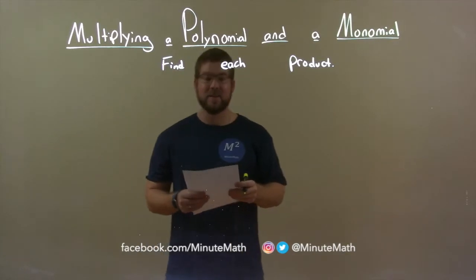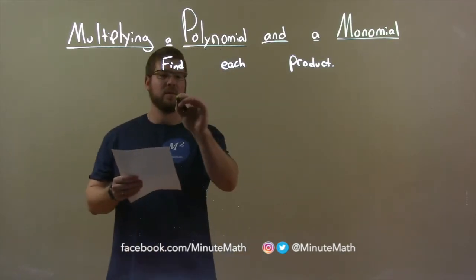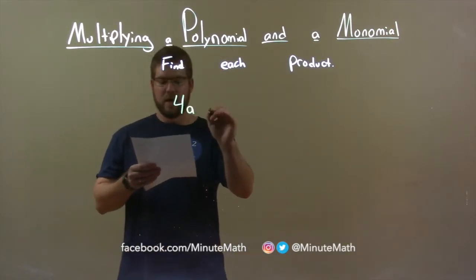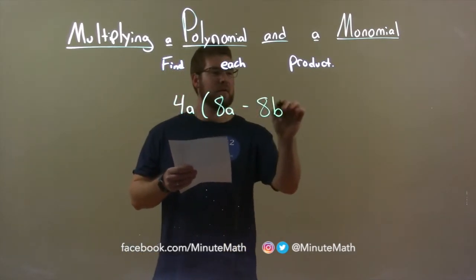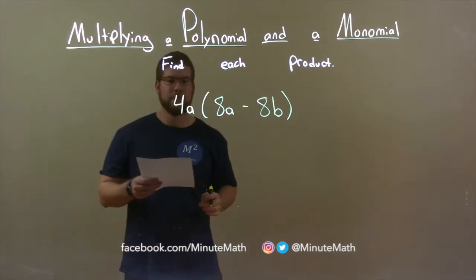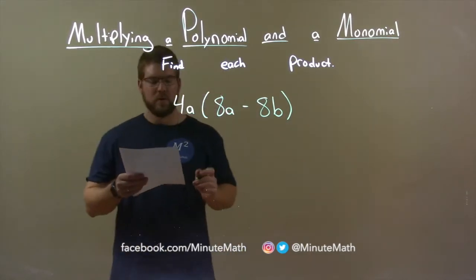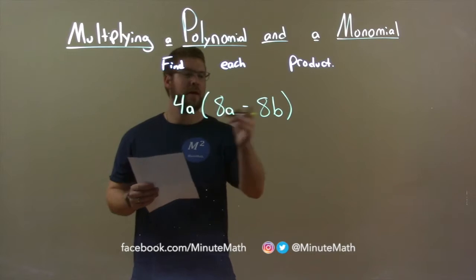So if I was given this product, 4a times 8a minus 8b, the first thing I want to do is distribute the 4a to both terms.